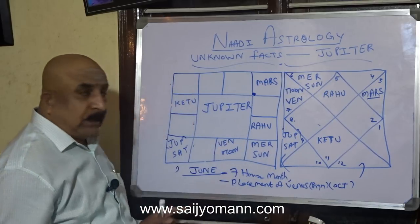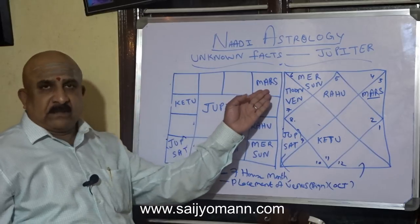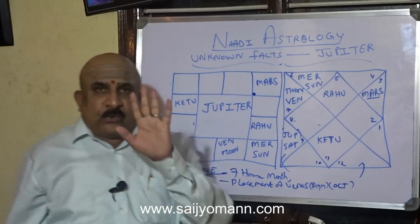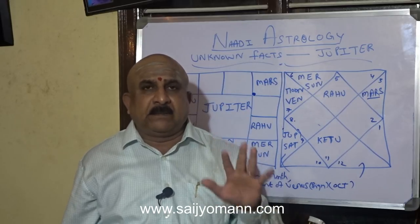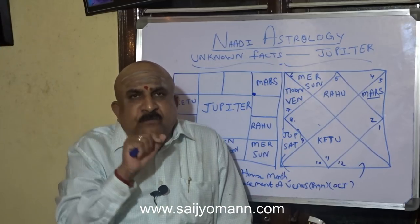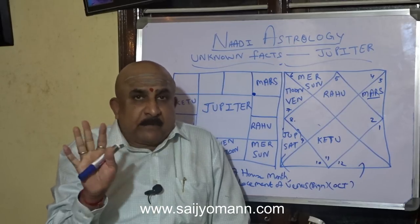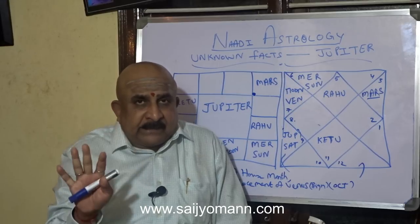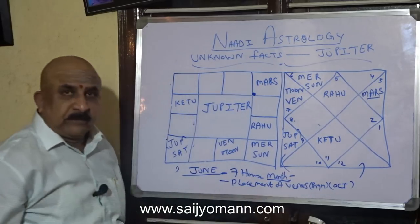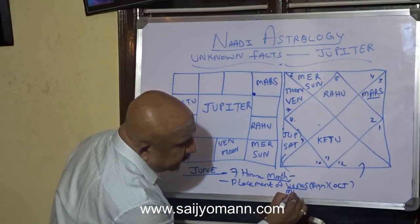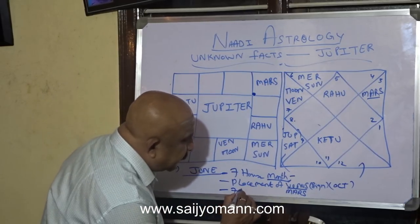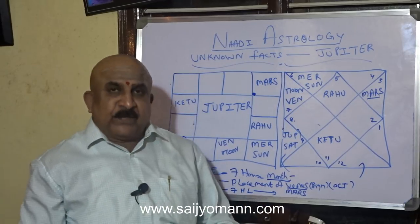I would like to do one more thing now. If a native has a step brother or step sister, even that is possible to identify. Usually Rahu and Ketu are the family circle — from the beginning of Rahu till the end of Ketu, that is the family circle. If you find only Mars outside the Rahu-Ketu circle, you can clearly tell the native has a step brother. In case Venus is outside the Rahu-Ketu circle, you can clearly say the native has a step sister.